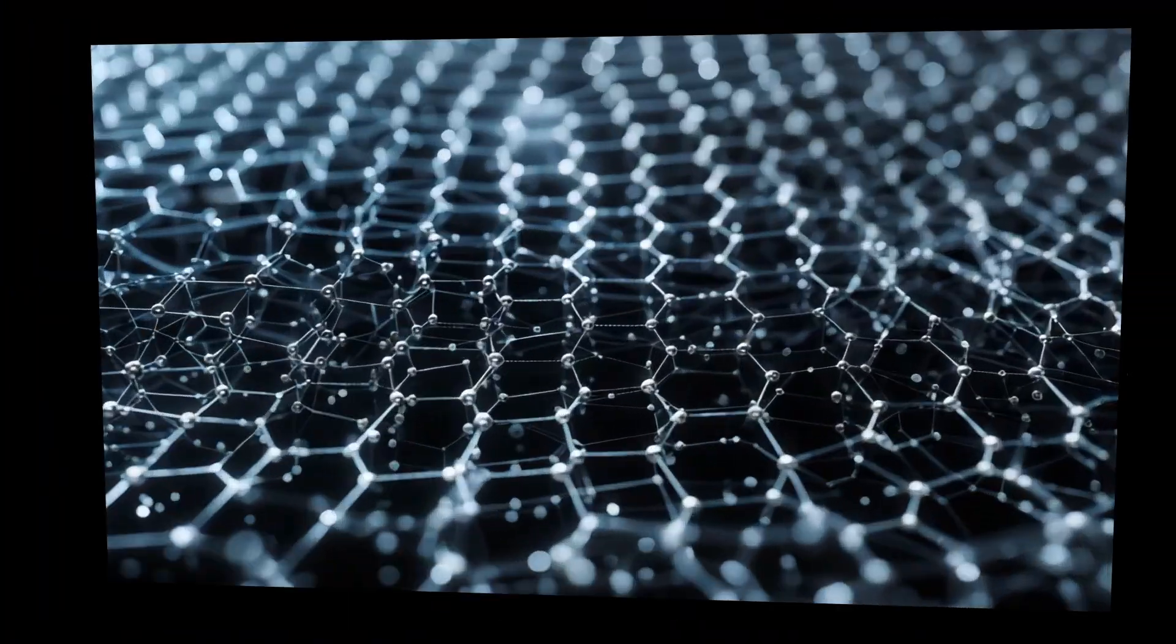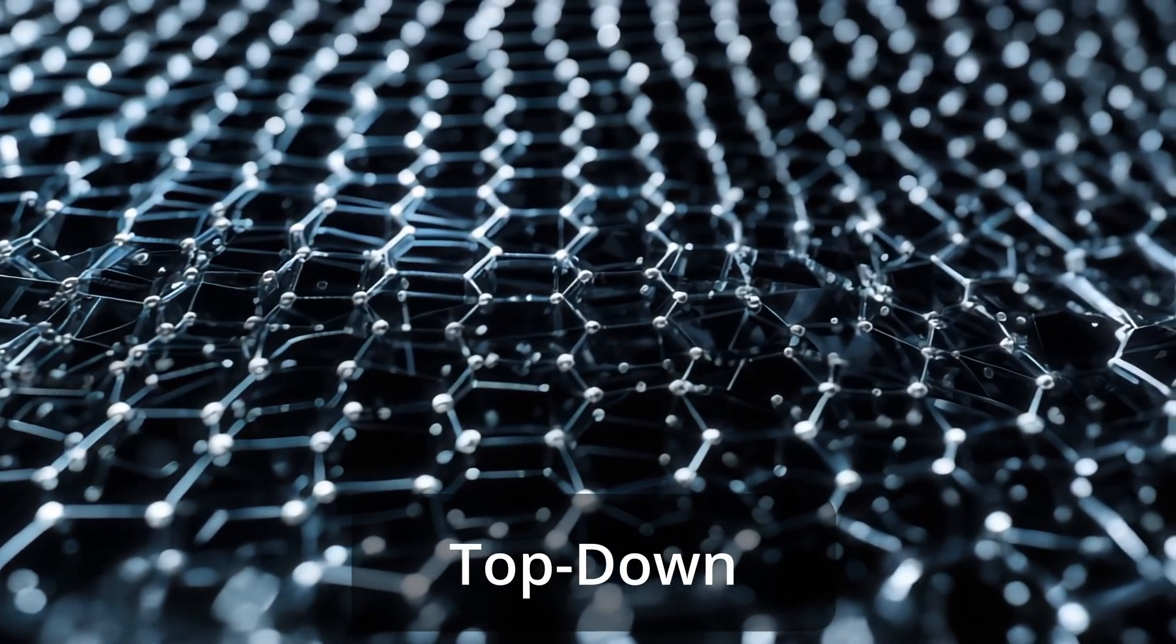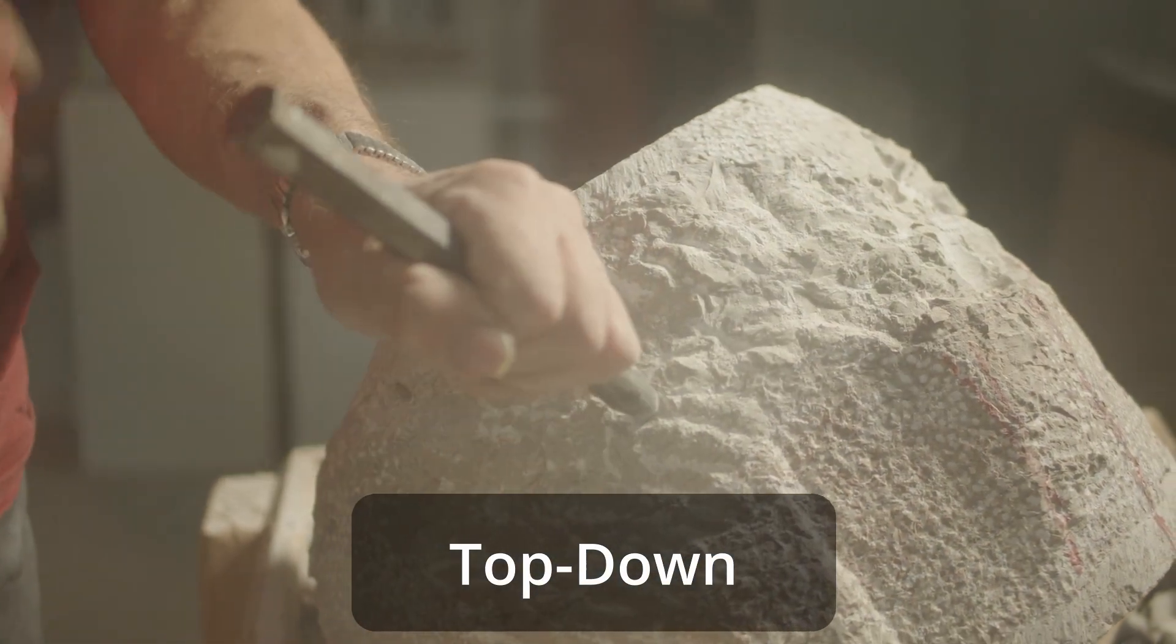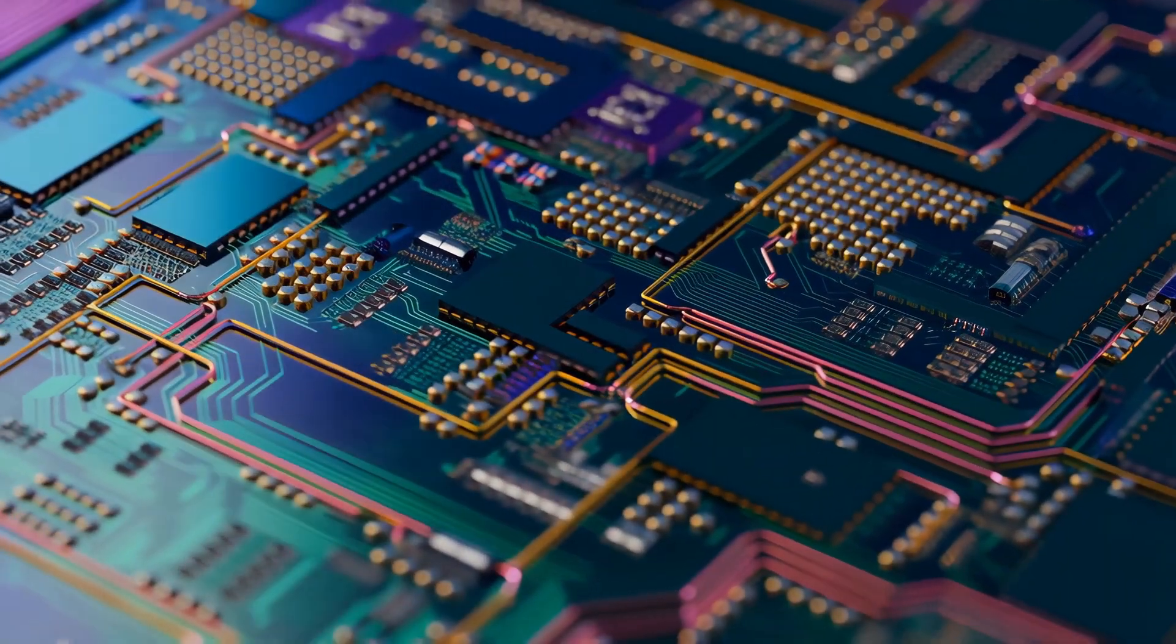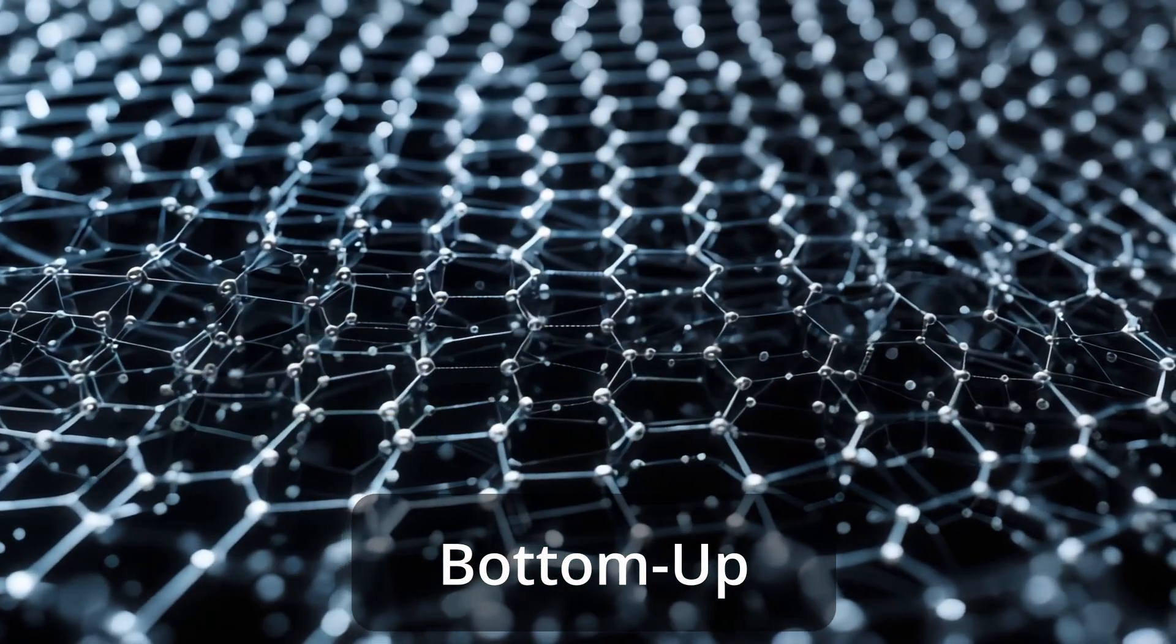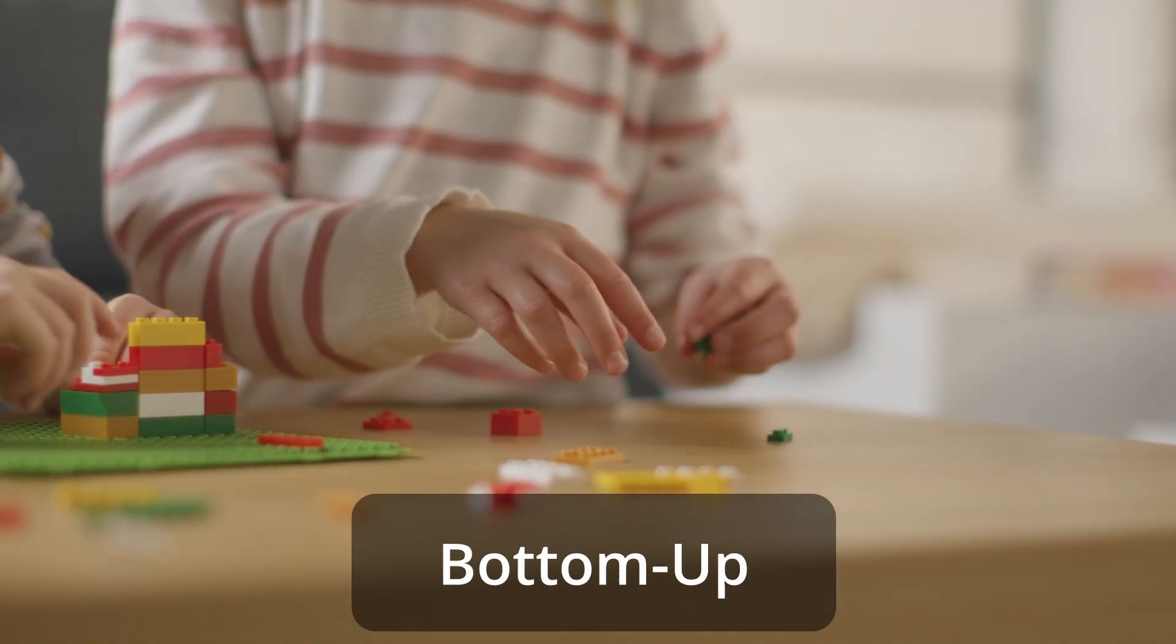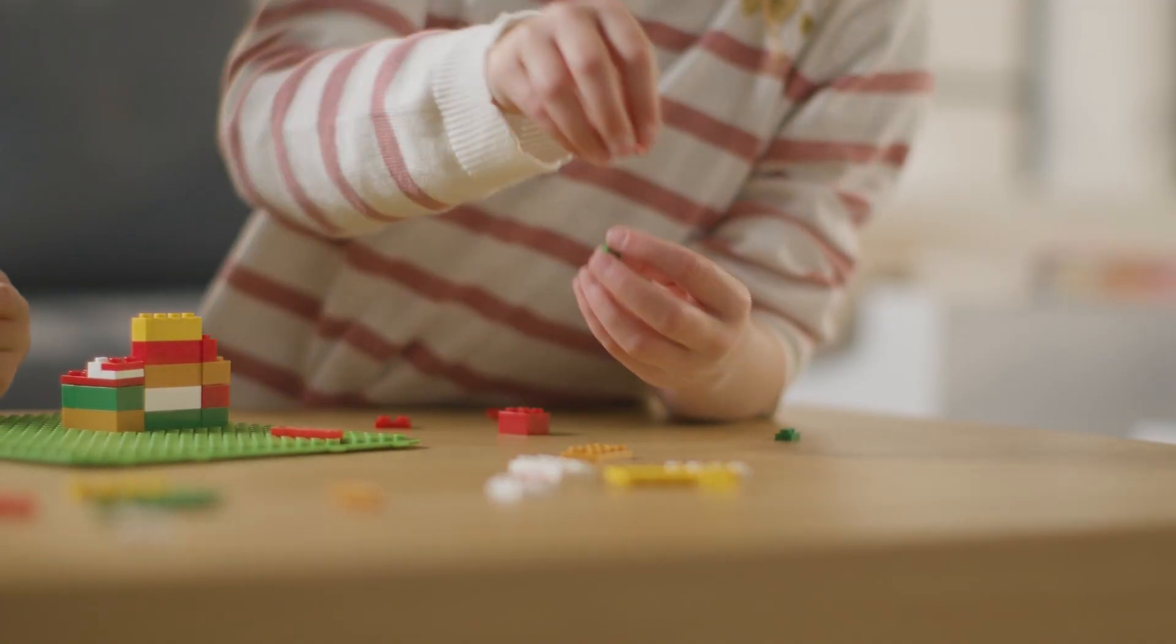So, how do we build with this invisible science? There are two main approaches. The first is top-down. Imagine taking a block of marble and sculpting it into a tiny statue. This is the method used to fabricate integrated circuits for our computers. The opposite approach is bottom-up. This is like building with Lego bricks, starting from individual atoms and molecules that self-assemble through chemical bonds. Both are crucial and are often used in combination.